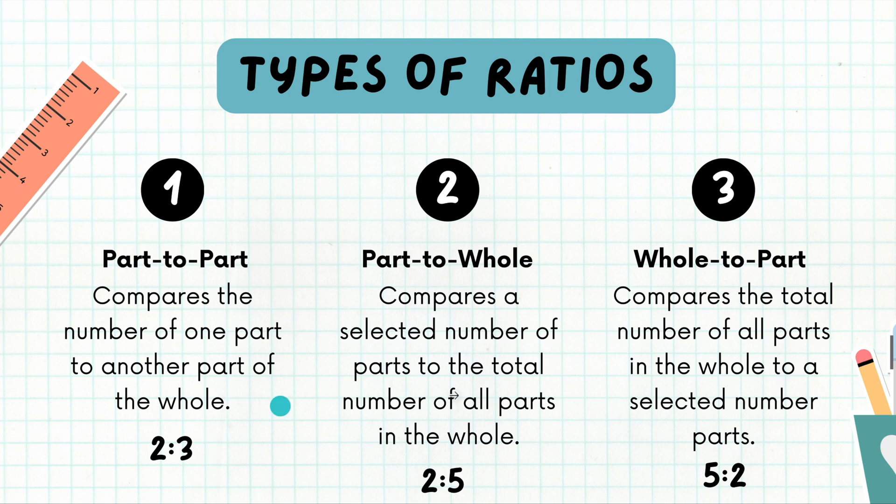Then we have part-to-whole, so this compares a selected number of parts to the total number of all parts within the whole. So if I have 2 to 5, that means that there are two red calculators and there are five in the whole or five altogether. And number three is just the opposite of number two.